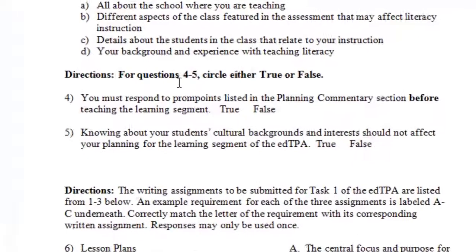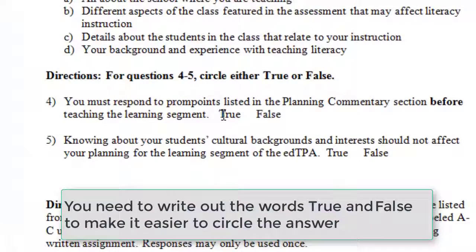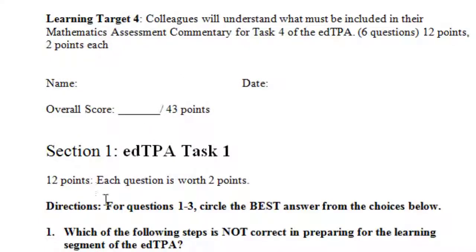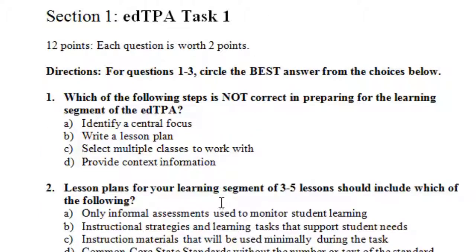You need to have directions for true/false. I prefer them at the end. I would say, 'For these questions, circle either true or false' — simple, clear directions. In a multiple choice section, you should say 'For questions one through three, circle the BEST answer.' Notice 'best' is capitalized — it doesn't necessarily mean the only answer, but it's the best one.